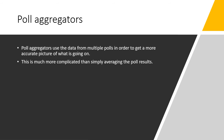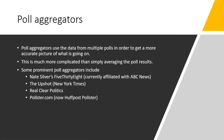Some prominent poll aggregators include Nate Silver's 538, currently affiliated with ABC News — in my view the gold standard of poll aggregators with very good results. The Upshot at the New York Times is another option, and Real Clear Politics was one of the first websites I remember doing this. There's also pollster.com, now the HuffPost Pollster. As you get more and more poll aggregators, it's inevitable that you get an aggregator aggregator — Polyvote is a kind of project that tries to aggregate aggregators, which is perhaps one level of meta that's unnecessary.